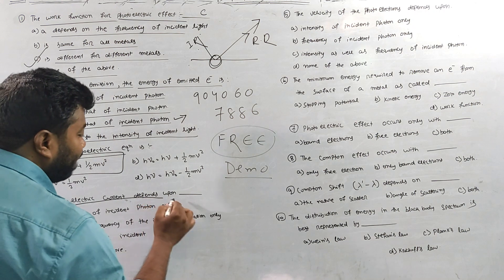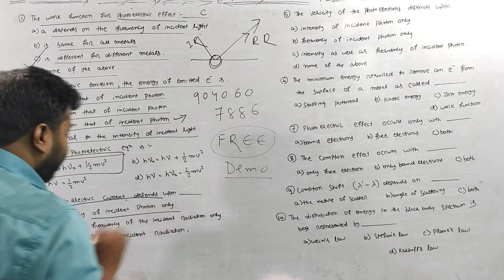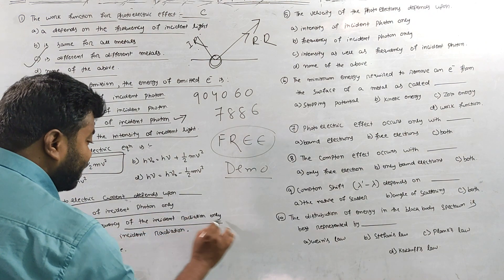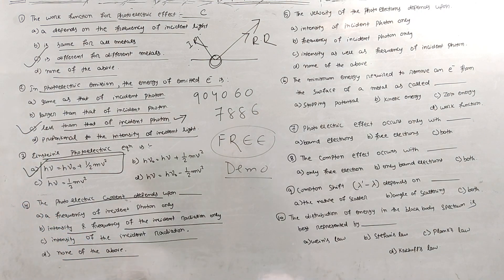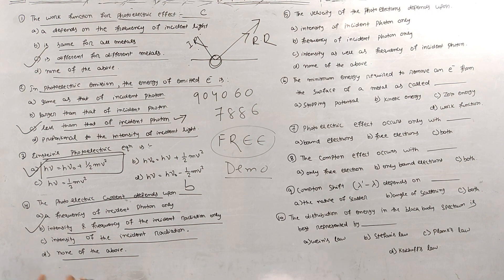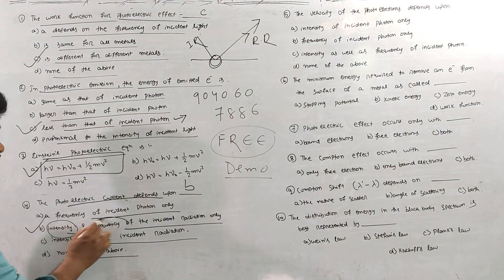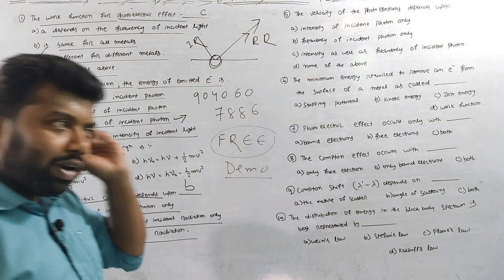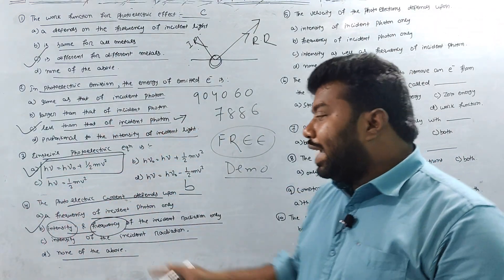The photoelectric effect depends on: frequency of the incident photon only, intensity and frequency of the incident radiation only, intensity of the incident radiation only, or none of these. The photoelectric effect depends on both the intensity and frequency of incident radiation. The photoelectric current depends on the intensity, and the frequency affects the emission.